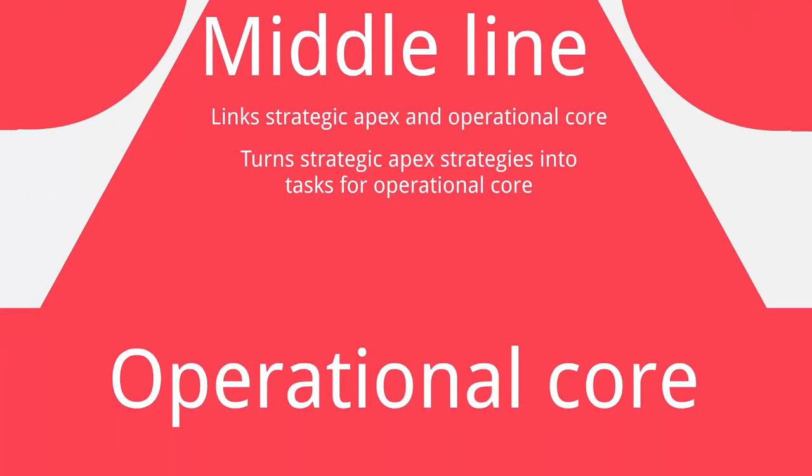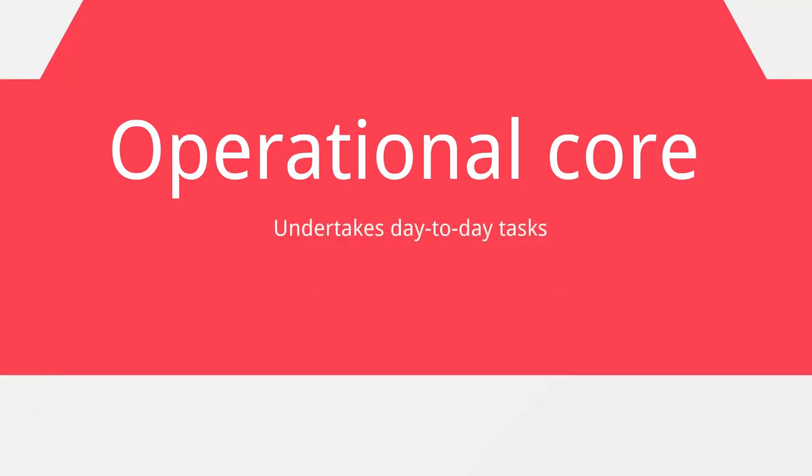Dropping down to the operational core: as already mentioned, the operational core undertakes the day-to-day tasks of a business — this could be sales, production, or providing services, whatever the business does. We can already see the coordination as we come down through the organization: strategy flows from the strategic apex, middle management turns it into tasks, and then those tasks are assigned to members of the operational core.